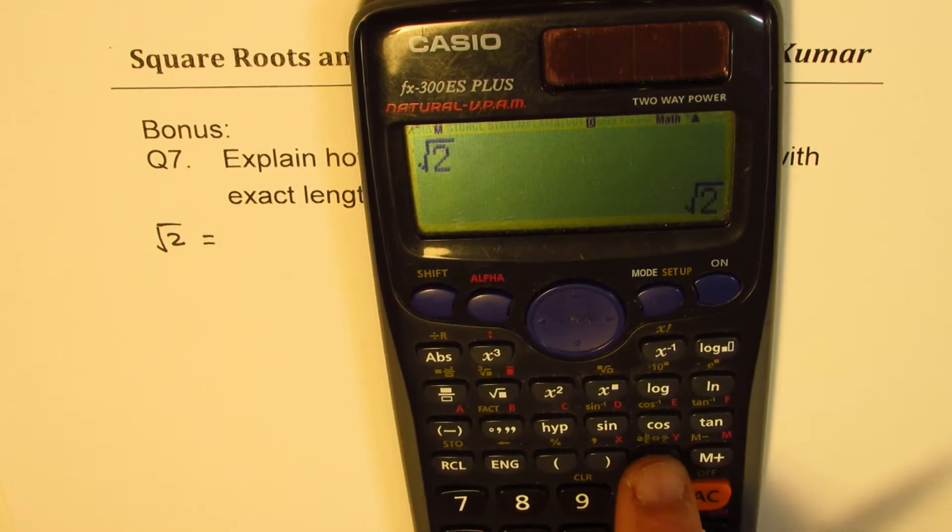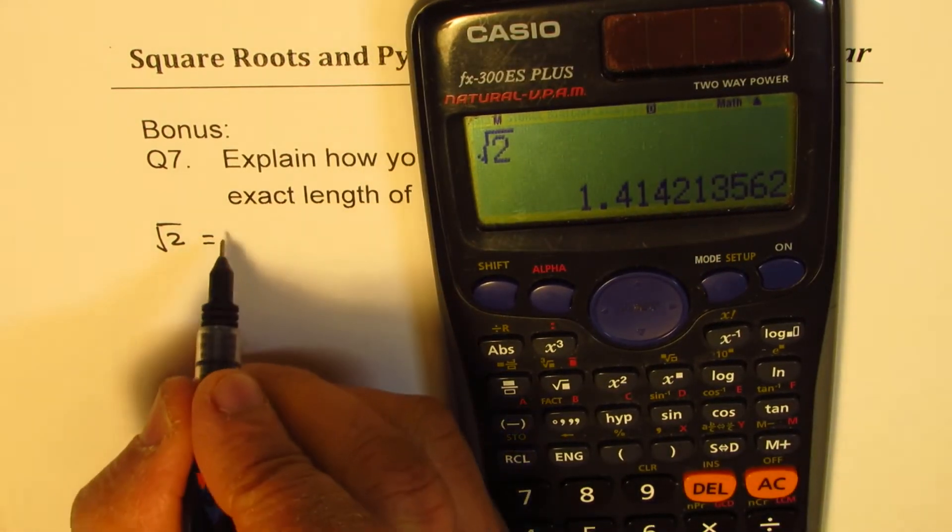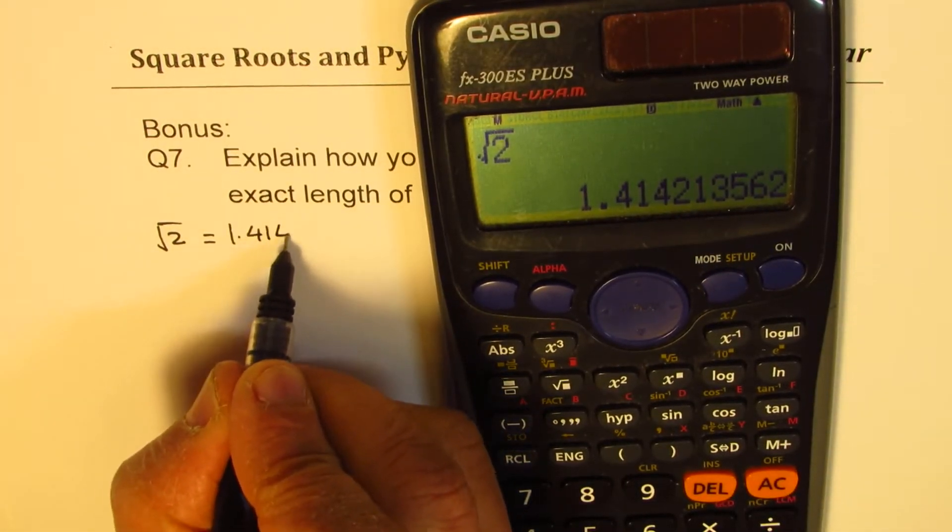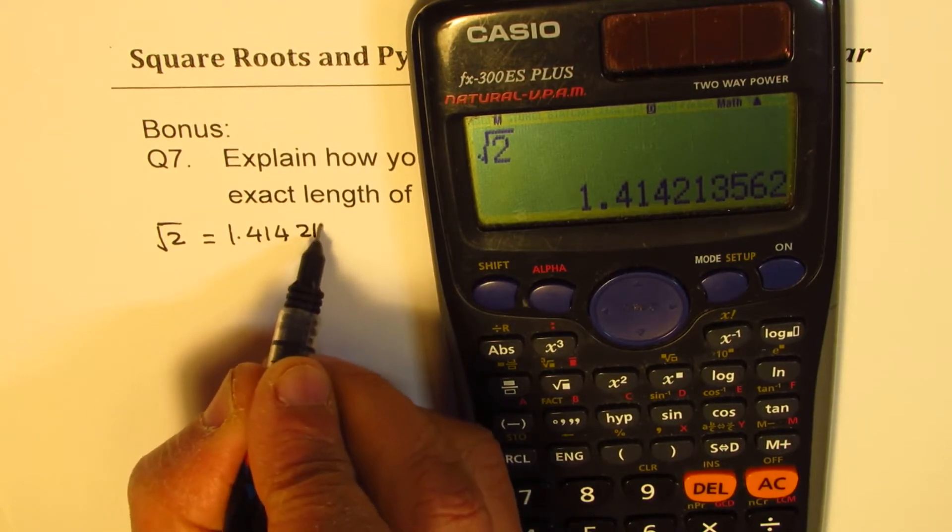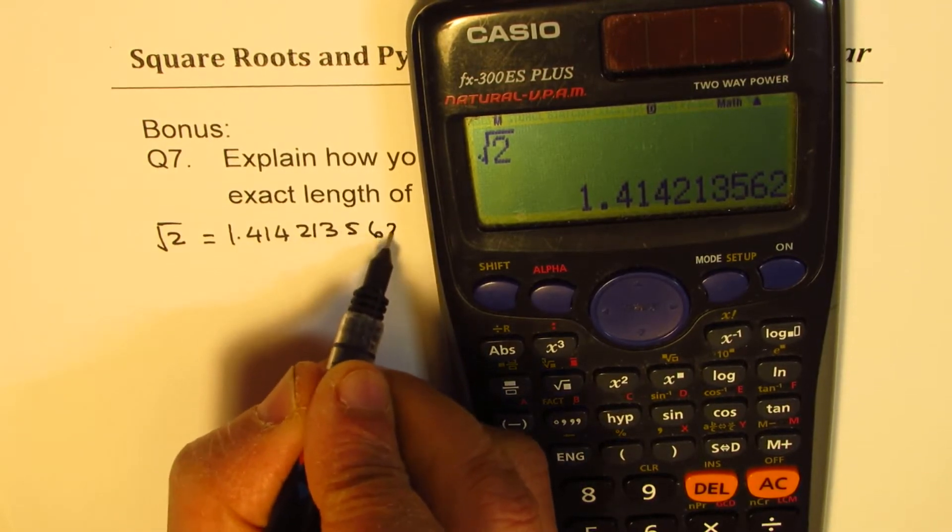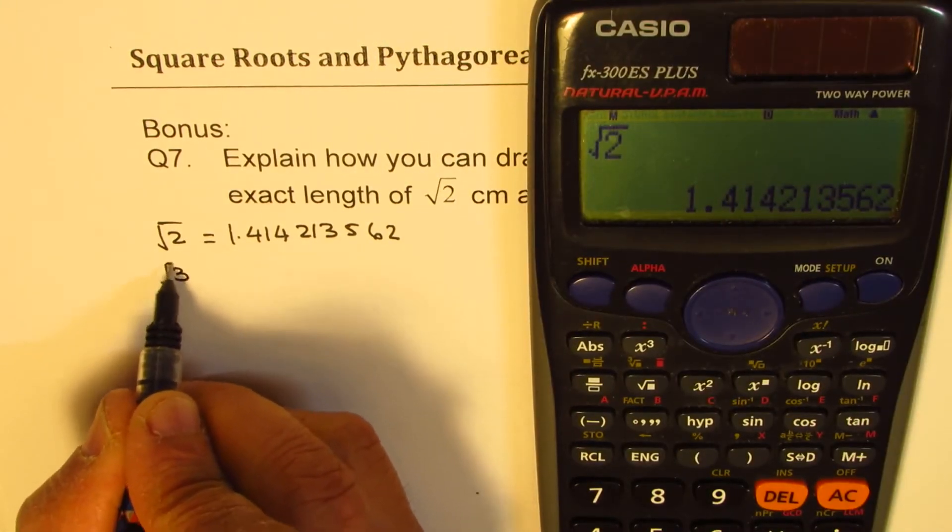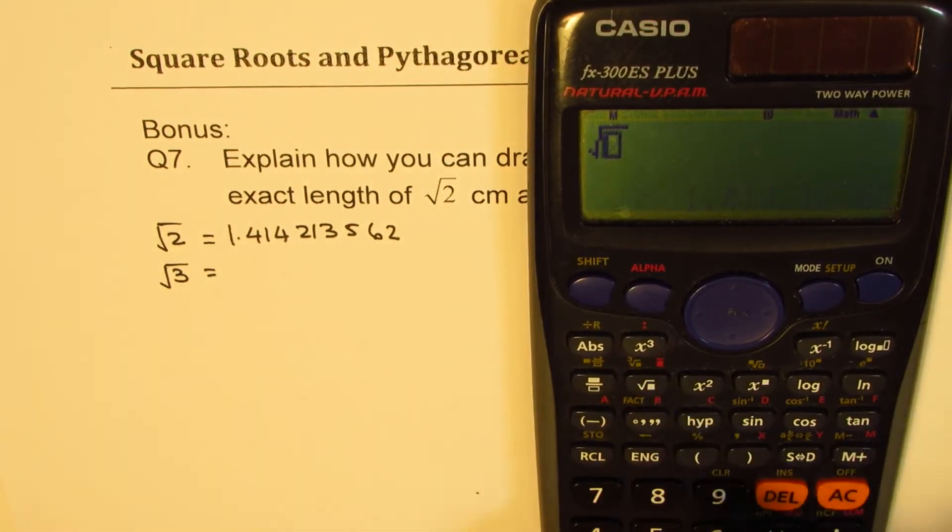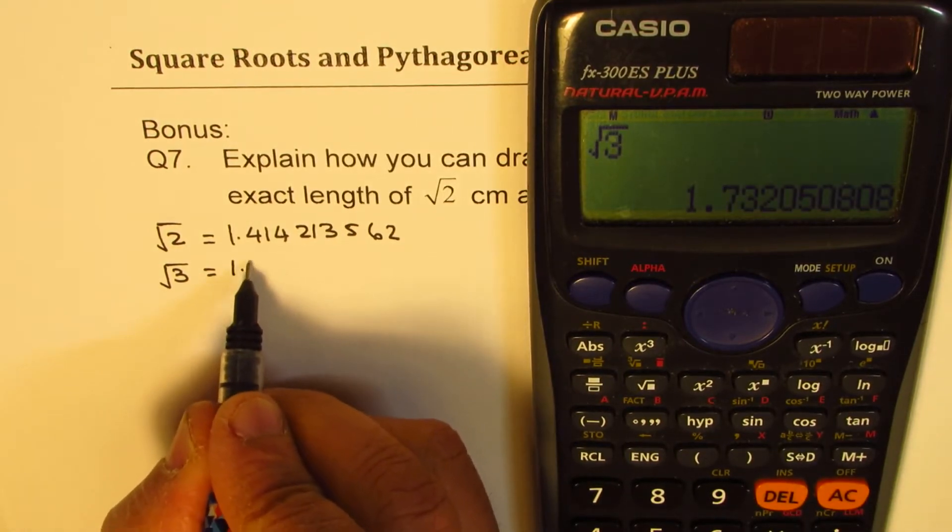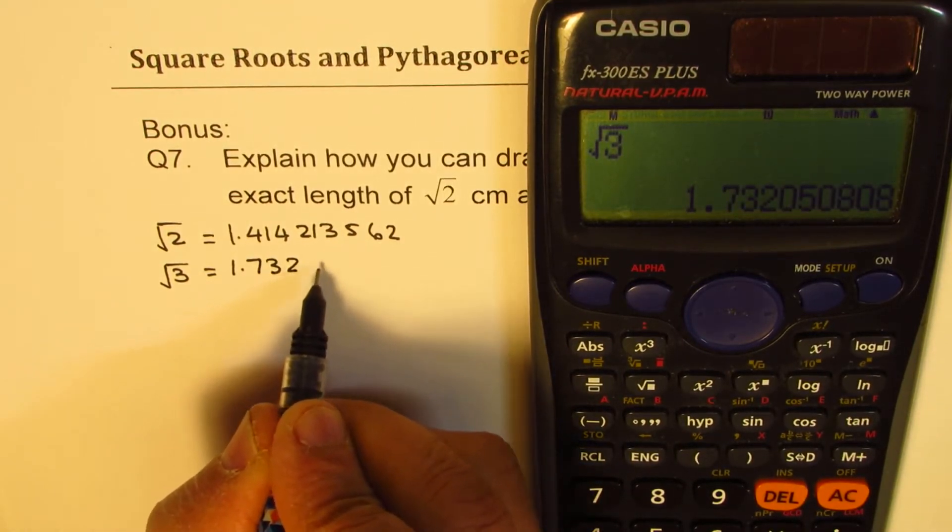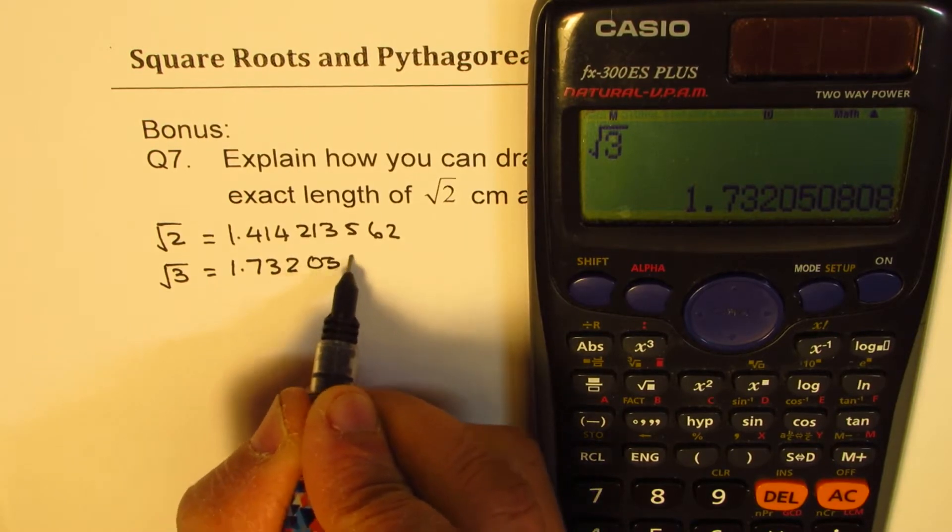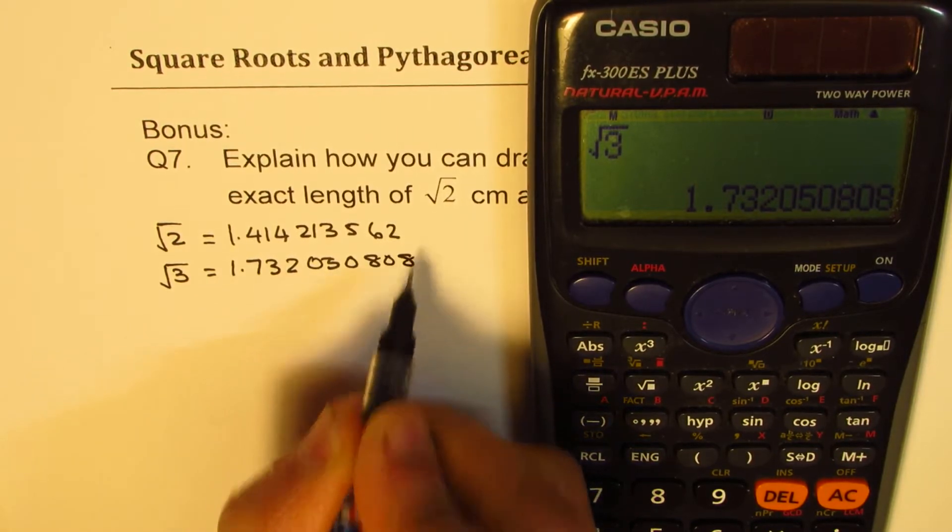Square root of 2 is equal to in decimals 1.414213562. And if I write square root of 3, what do I get? Square root of 3 is equal to in decimals 1.732050808.